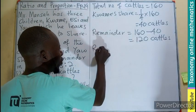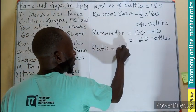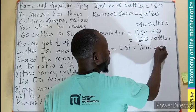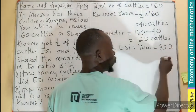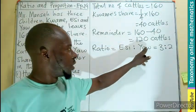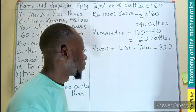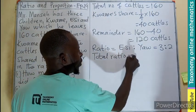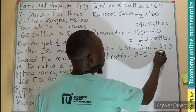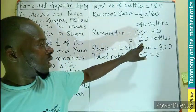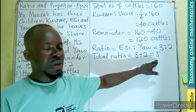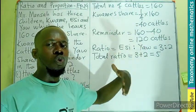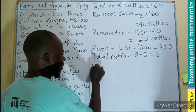The ratio for Ac to Yam is 3:2 — 3 parts for Ac and 2 parts for Yam. The total ratio is 3 plus 2, which equals 5. So the 120 cattle will be shared in 5 parts, whereby Ac takes 3 parts and Yam takes 2 parts.